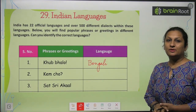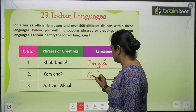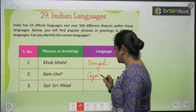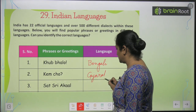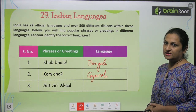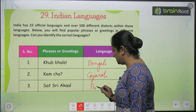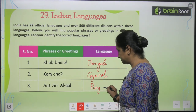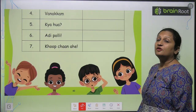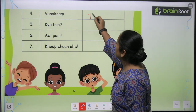'Kemcho' — Kemcho is said in Gujarati. 'Sat Shri Akal' — Sat Shri Akal is said in Punjabi. 'Vanakam' — Vanakam is said in Tamil.